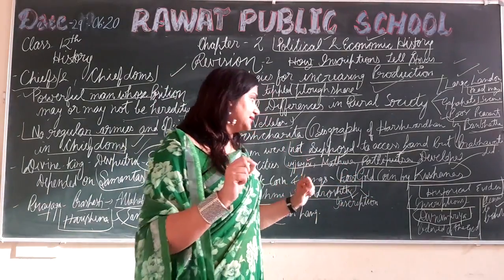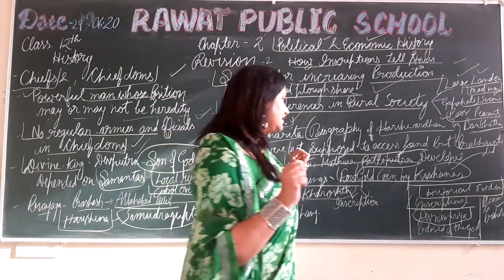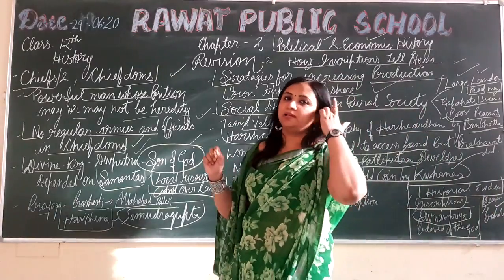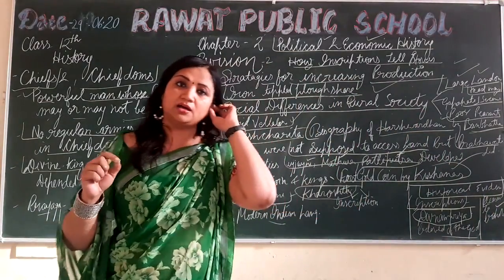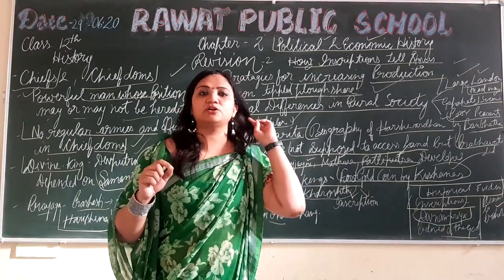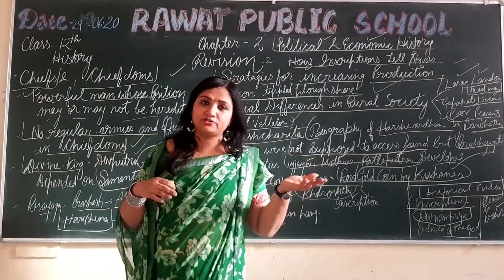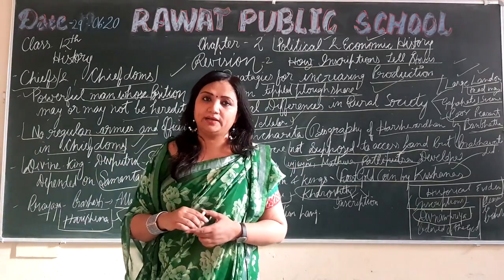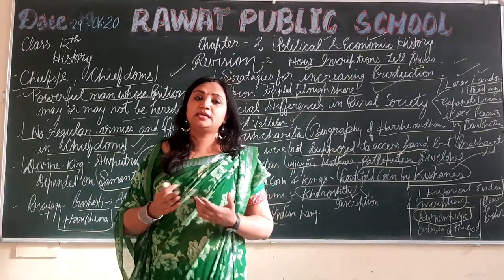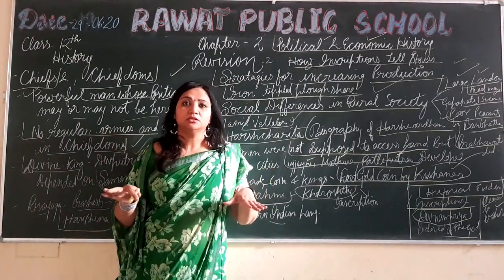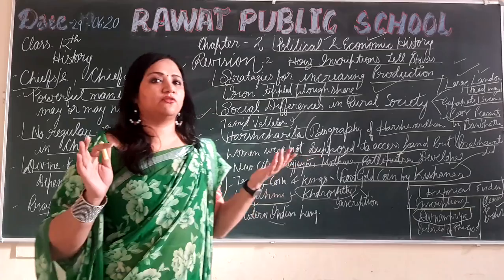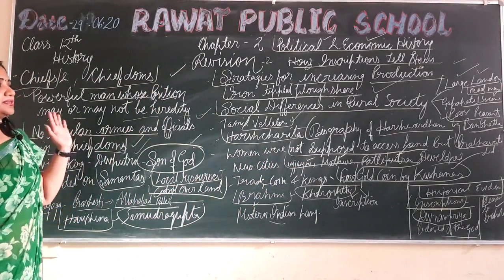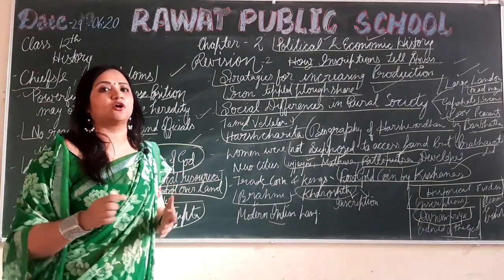Dev Naam Priya — what was written on inscriptions and what it meant. Dev Naam Priya was the name of Ashoka. Why was this name given to Ashoka? Because he left the war and followed the path of non-violence and Dhamma. So in such a manner he was also called the great king. So Dev Naam Priya was Ashoka. In such a manner, things were written in the praise of kings.